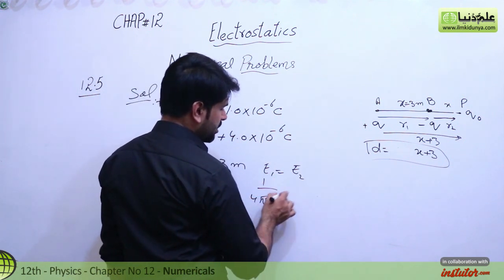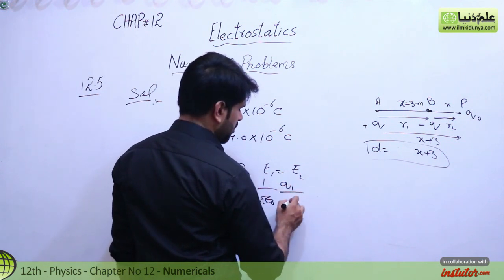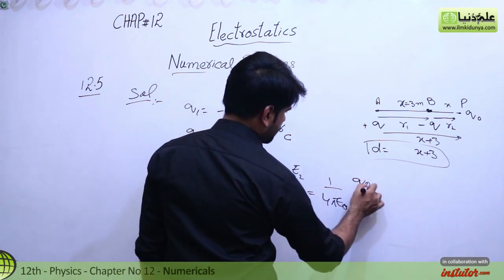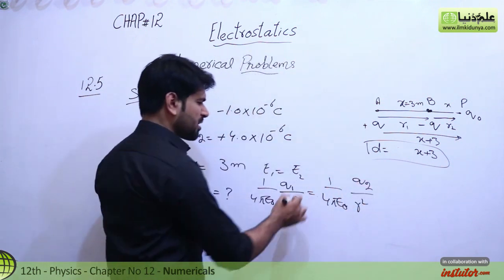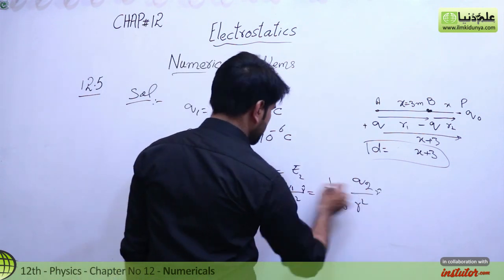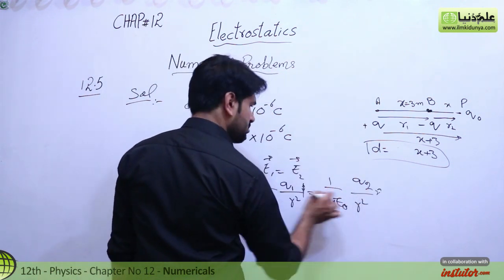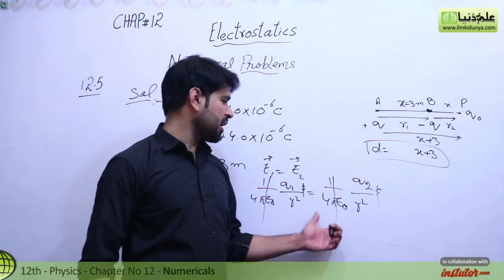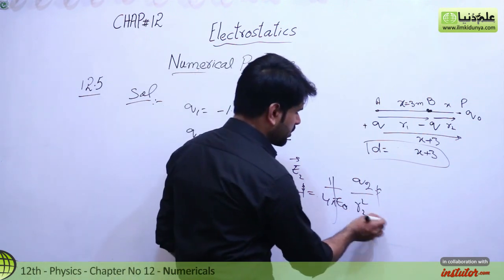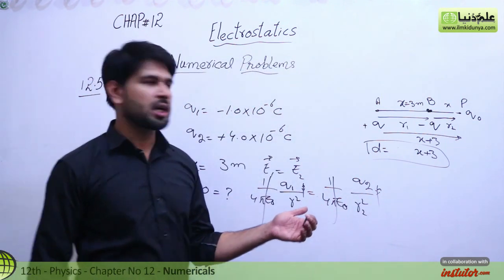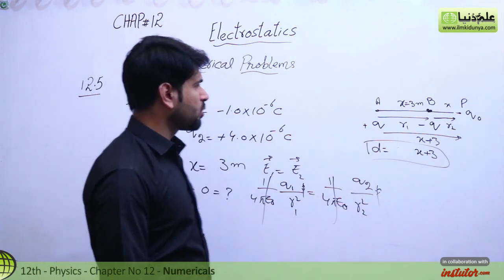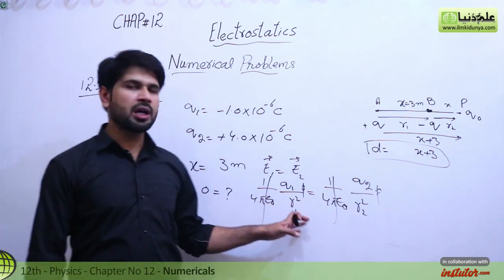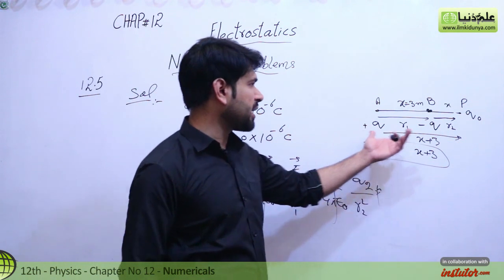We write: 1 over 4 pi epsilon not times q1 over r1 square is equal to 1 over 4 pi epsilon not times q2 over r2 square. The unit vectors will cancel if we take magnitude form. So we get q1 over r1 square equals q2 over r2 square. Here R1 is one distance and R2 is another. You need to put the values of q1, q2, R1, and R2. You can call one R1 and the other R2, or vice versa.